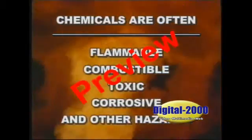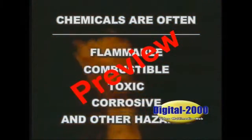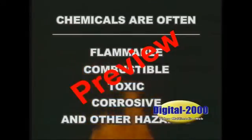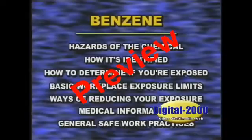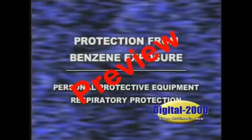Chemicals are often flammable, combustible, toxic, corrosive, and other hazards, so you have to know and learn this information as part of your job responsibilities. Let's examine the chemical benzene. In this program, we'll discuss some of the hazards of the chemical, how it's identified, how to determine if you're being exposed, basic workplace exposure limits, ways of reducing your exposure, medical information, and general safe work practices. We will also review information relating to protection from benzene exposure such as personal protective equipment and respiratory protection.